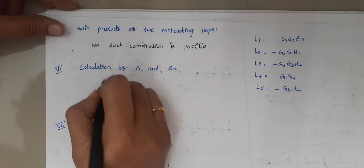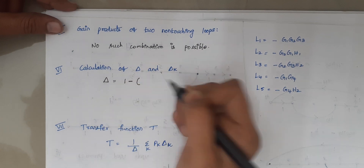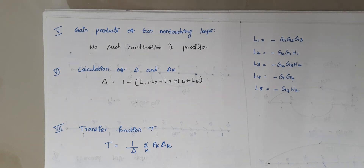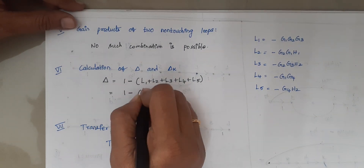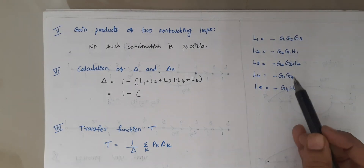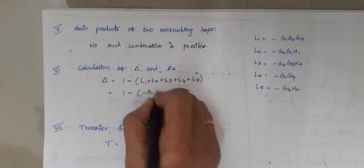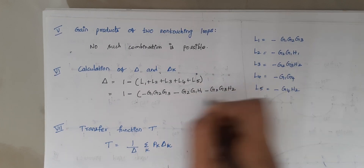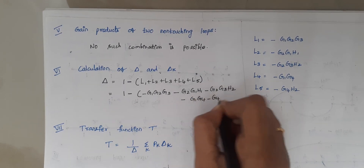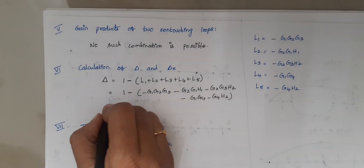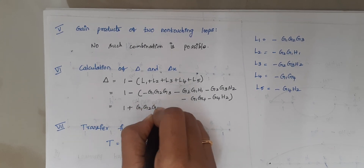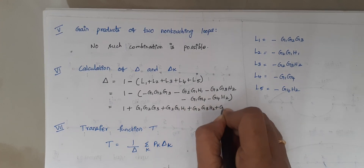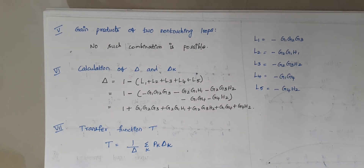Now for the calculation of delta (Δ) and delta_k. Delta is 1 minus the sum of individual loop gains. We have 5 loops: L1 + L2 + L3 + L4 + L5. Substituting the values: Δ = 1 − (−G1G2G3) − (−G1G2H1) − (−G2G3H2) − (−G1G4) − (−G4H2), which gives Δ = 1 + G1G2G3 + G1G2H1 + G2G3H2 + G1G4 + G4H2.